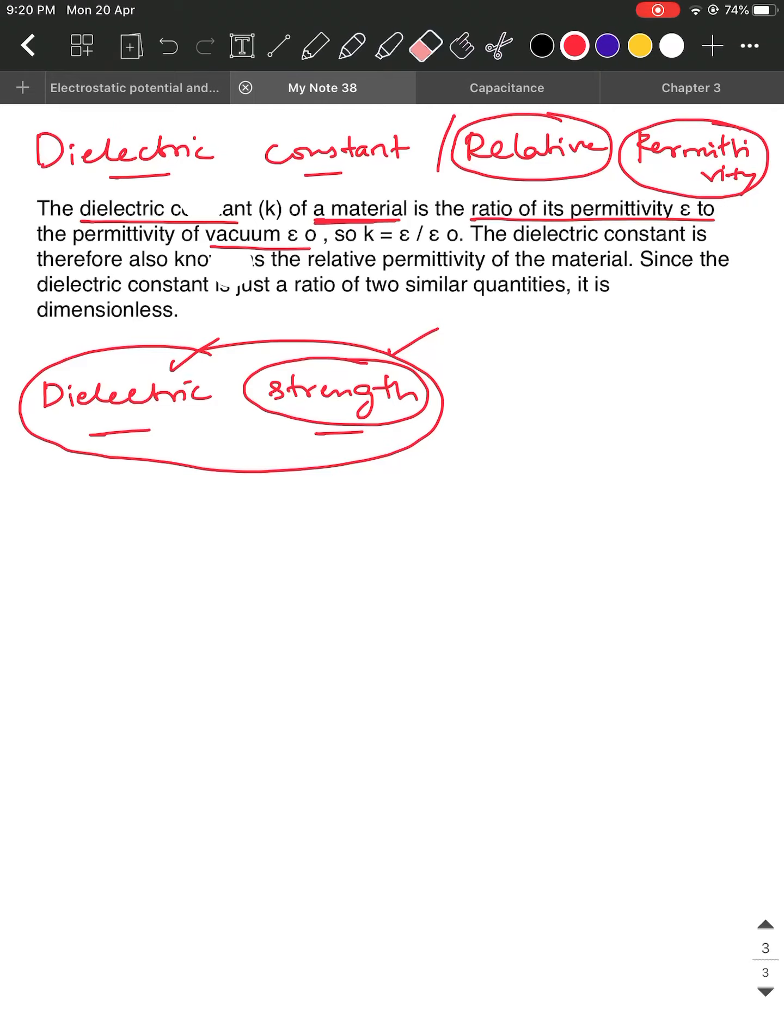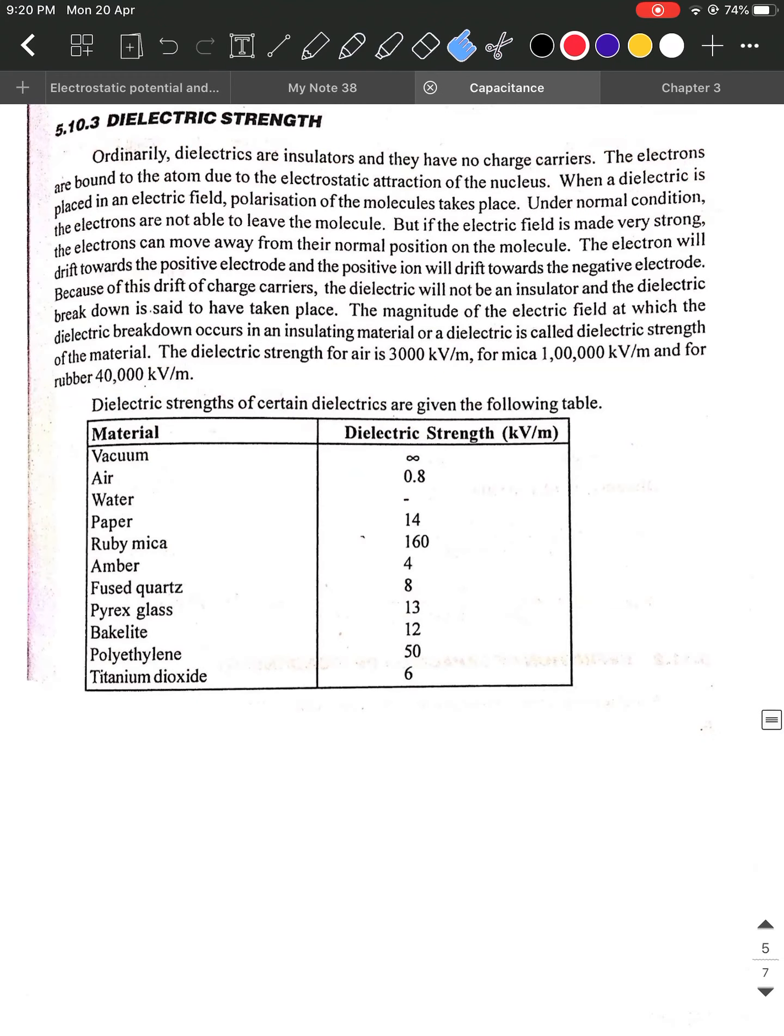Generally, dielectrics are insulators. We know this, as we have discussed, they do not have any charge carriers. The electrons are bound to the atom due to the electrostatic attraction of the nucleus. That is why we discussed that it becomes like an elastic membrane and behaves like a dipole. When dielectric is placed in external field due to this elastic property, the electrons are not able to leave the nuclear attraction.